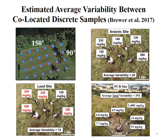We picked three sites in Hawaii we knew were contaminated: one with arsenic, one with lead, one with PCBs. The arsenic site was contaminated with arsenic-bearing wastewater discharged into fine-grained soil, so we expected the lowest variability between co-located discrete samples. The lead site had lead-contaminated ash from a municipal incinerator mixed with fill material — we expected more heterogeneity. The PCB site had PCB-based oil dumped on the ground from electrical equipment, where existing data already showed wildly variable numbers within just a few feet.